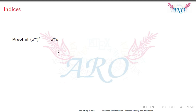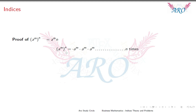Proof of A power M whole power N equals A power MN. A power M whole power N means A power M multiplied N times: A power M · A power M and so on N times. As per the first law, when the bases are equal we add the exponents, giving M plus M plus M N times, which equals A power MN.